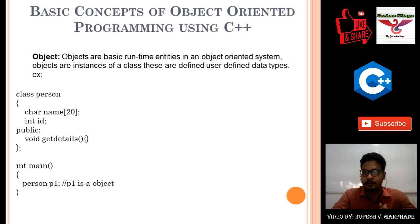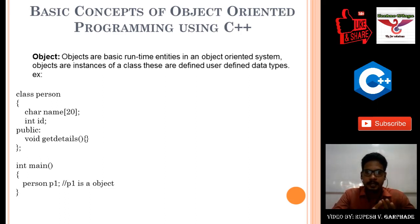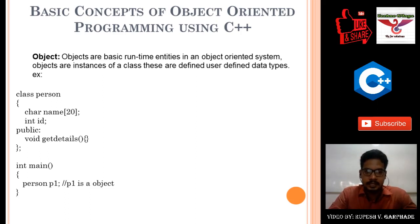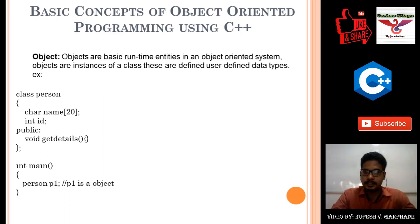Now let's look at a programming example on screen. Here the class name is 'Person'. For every person there will be some properties.